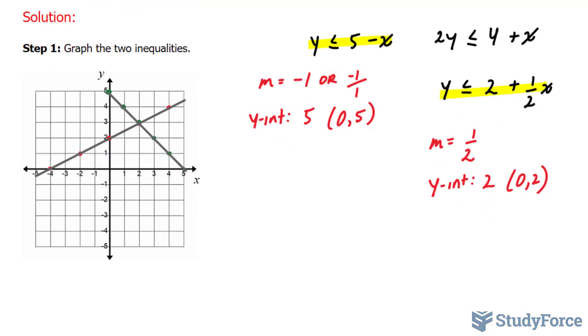That being said, let's document what these points are. We have a point right here at 0 and 0, a point here at 0 and 2, a point here at 5 and 0, and a point here, the point of intersection, at 2 and 3.